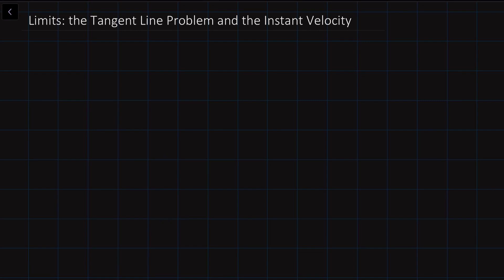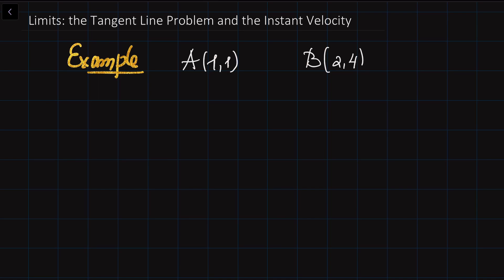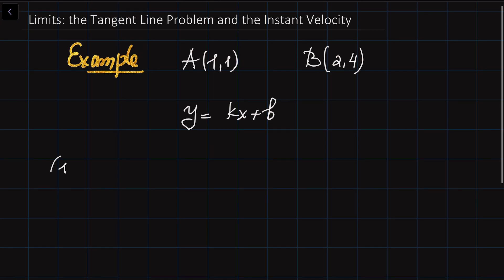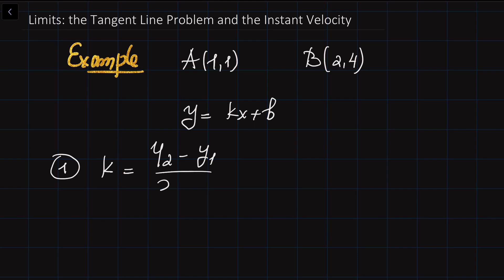We've discussed in previous lectures that we can construct a line through two points. If you're given two points you can construct the equation of the line. So let's do an example. Let's say you're given point A with coordinates (1, 1) and point B with coordinates (2, 4), and I would like to figure out the equation of the line through these two points. The equation of the line is given in the form Kx plus B, where K is the slope and B is the Y-intercept. We can find the slope using the formula: Y2 minus Y1 divided by X2 minus X1.